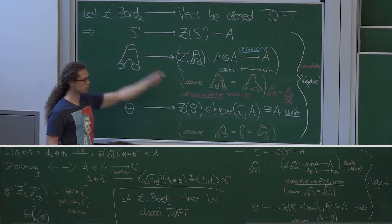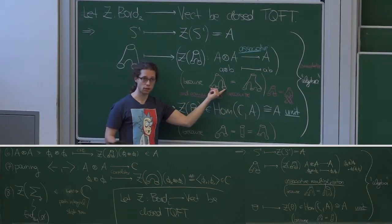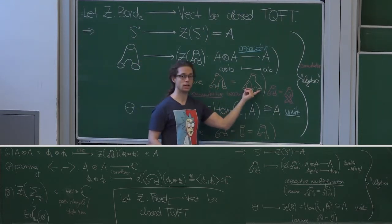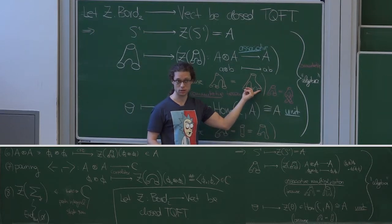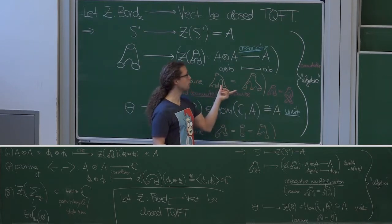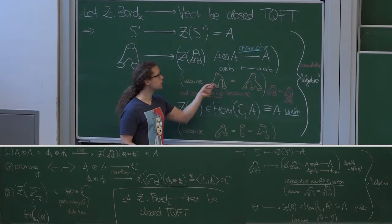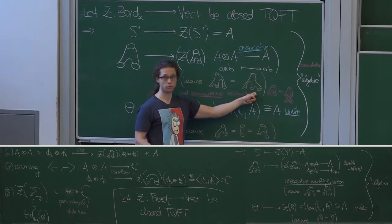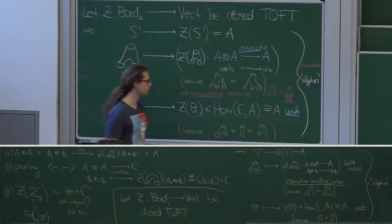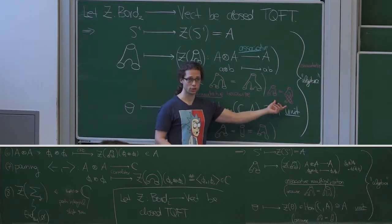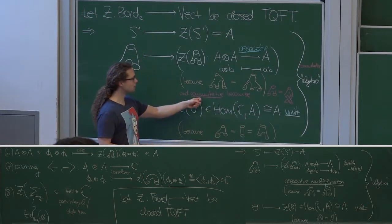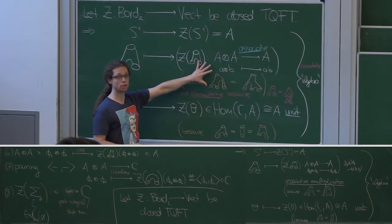So to an element A tensor B, we get something called A times B in the vector space. And because of this identity here between morphisms in this category, more precisely, this particular picture is supposed to present a representative of the same class as this picture represents a diffeomorphism class. From this, it follows nearly immediately that this product here is associative. So A times B times C is the same as A times the product of B and C. Similarly, because of this identity, this multiplication is also commutative.